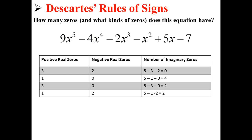Here are all the different possibilities. We could have three positive real zeros, two negative real zeros, and zero imaginary zeros. Or we could have one positive real zero, zero negative real zeros, and four imaginary zeros. We could have three positive real zeros, zero negative real zeros, and two imaginary zeros. Or one positive real zero, two negative real zeros, and two imaginary zeros. This is according to Descartes' Rule of Signs.